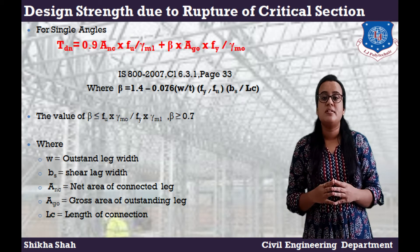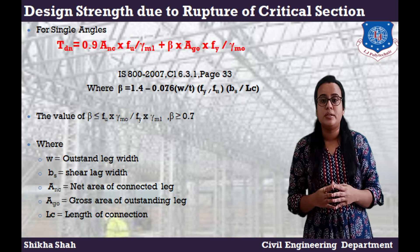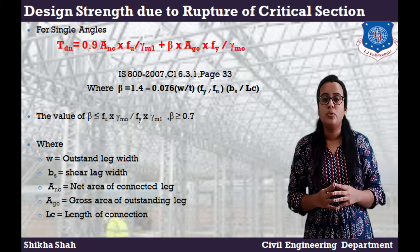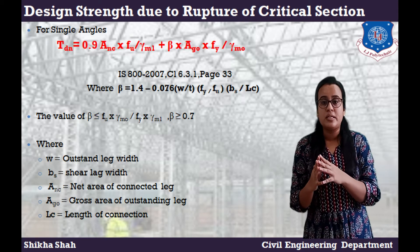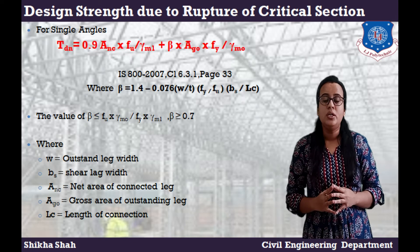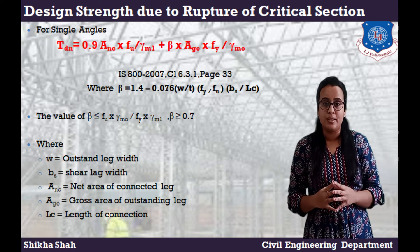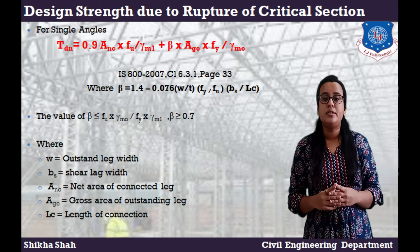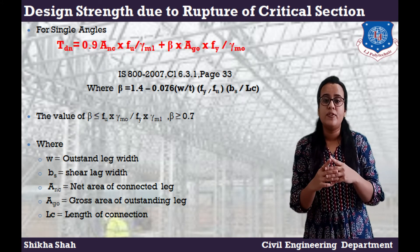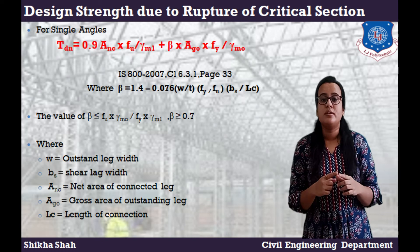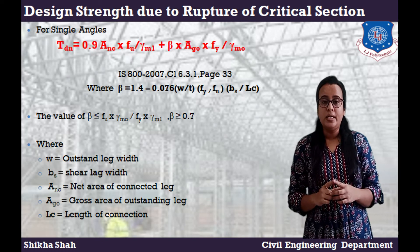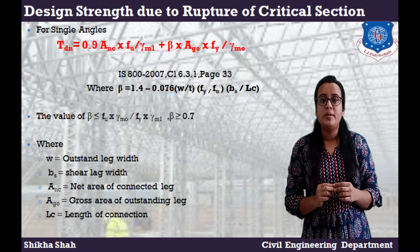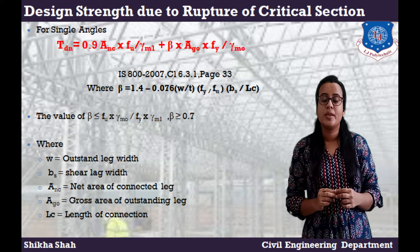This is given in Clause 6.3.1, page 33, where β = 1.4 − 0.076 × (w/t) × (Fy/Fu) × (bs/Lc). Here w is the outstanding leg width, bs is the shear leg width, Anc is the net area of the connected leg, Ago is the gross area of the outstanding leg, and Lc is the length of connection. The value of beta should be checked for minimum and maximum limits.